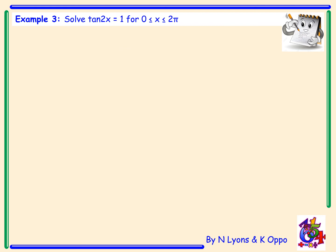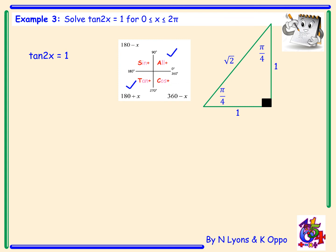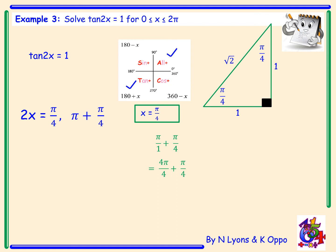Example 3. Solve tan 2x = 1 for x lying between 0 and 2π. Since we have 2x, that means two waves, so we need to obtain four angles. Tan is positive in the first and third quadrants. Drawing our exact value triangle with opposite and adjacent both equal to 1 gives an angle of π/4. The angle in the first quadrant is π/4, and the third quadrant angle is π + π/4. Changing π/1 to 4π/4 and adding π/4 gives 5π/4.